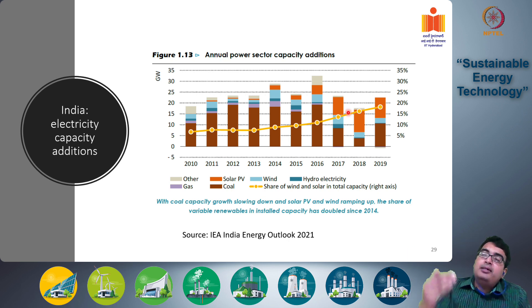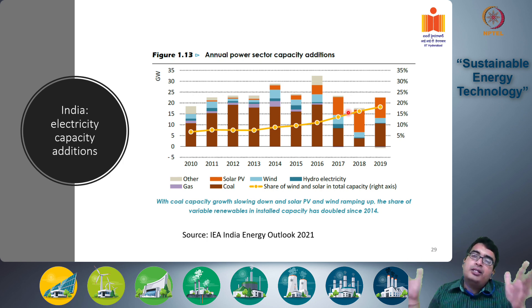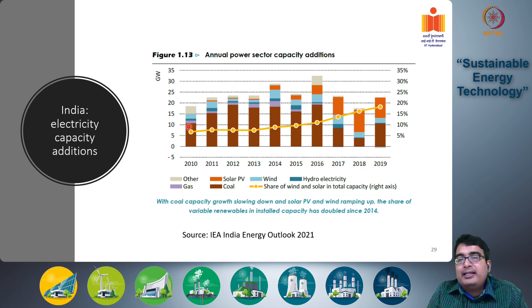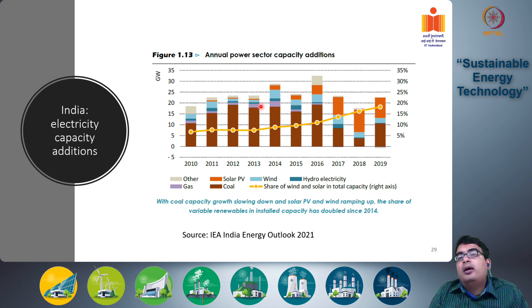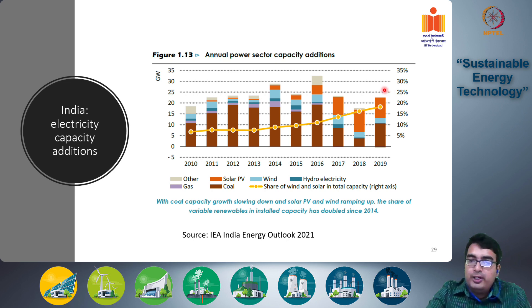The percentage share of renewables has increased to around 20 percent of total capacity additions. There has been a monotonic increase in renewable power systems being introduced each year. Up until around 2014, most new power plant capacity additions were from coal; solar and wind became important from 2014 onwards and continue to grow. In the coming years, most new electricity production capacity additions will be solar and wind only — and that is a good trend.